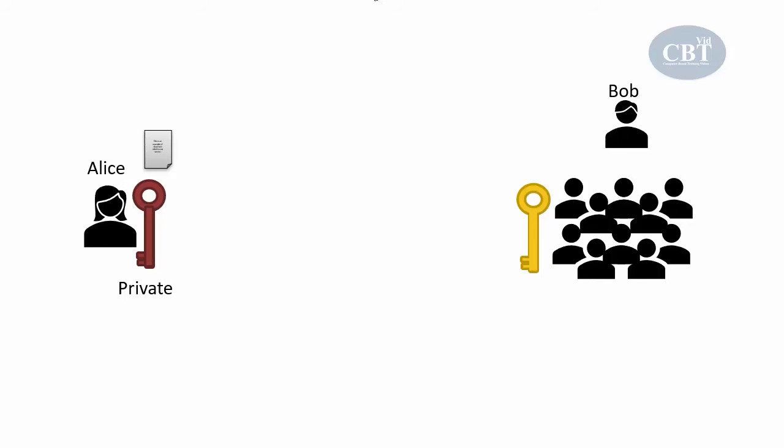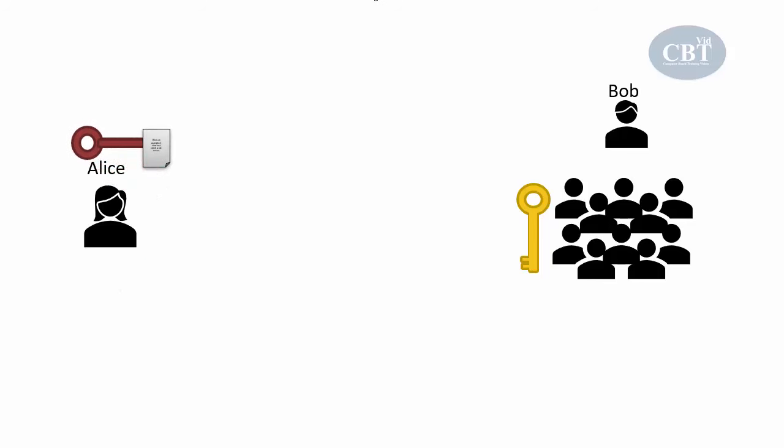So even if the whole crowd has Alice's public key, they cannot decrypt the message that was encrypted with Alice's public key. Alice is the only one who has the private key, and she can decrypt her message using her private key and see the content of the message.